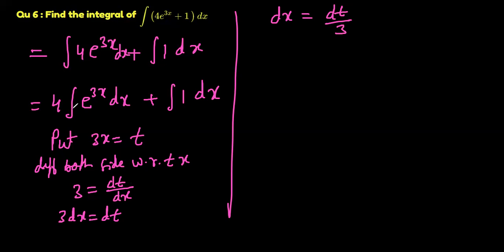This will help us integrate the first part. The part one now looks like 4 times e to power 3x. So e to power 3x now looks like e to power t and dt divided by 3, plus integration of 1 dx as it is, because the integration of 1 would be x.